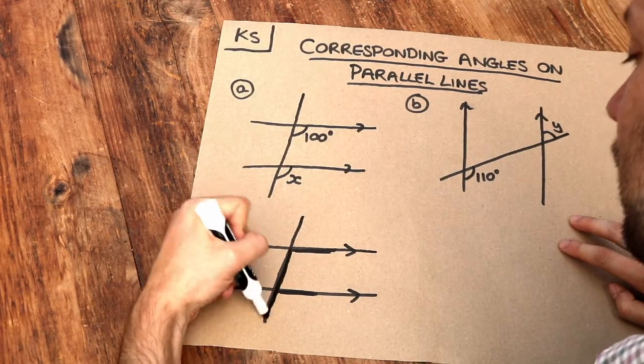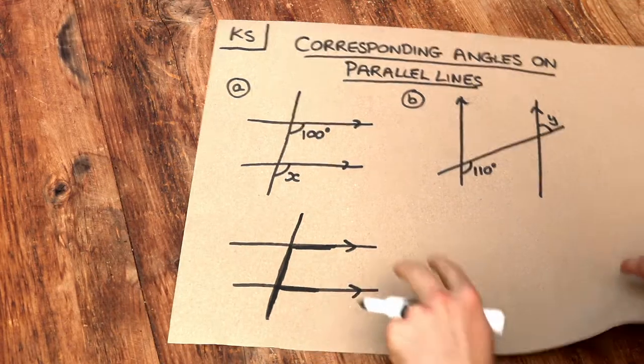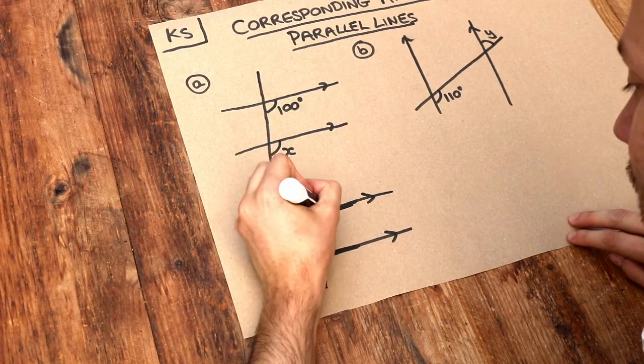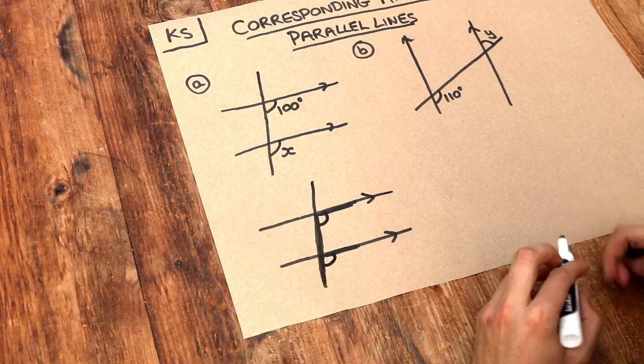So if I draw an F like this, you can see the capital letter F, then basically this angle is going to be the same as this angle.